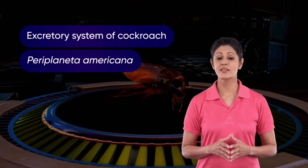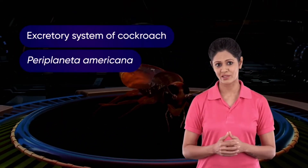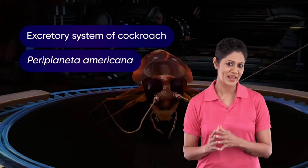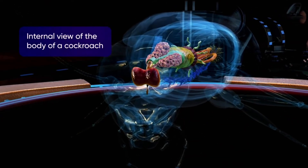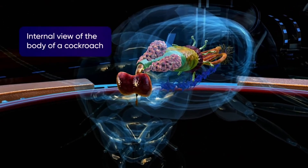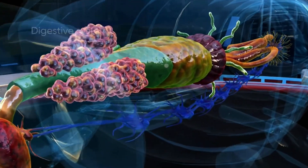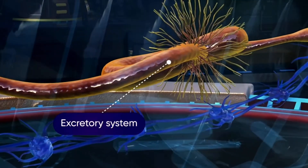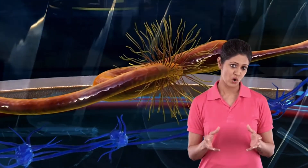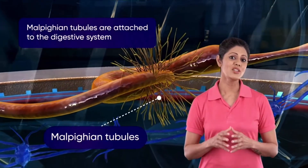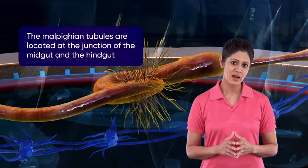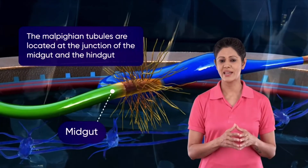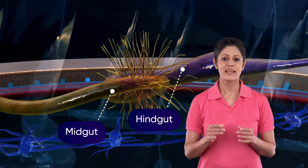The excretory system of a cockroach, Periplaneta americana: cockroaches belong to the class of insects. The excretory organs in a cockroach are Malpighian tubules that are attached to the digestive system. These Malpighian tubules are located at the junction of the mid-gut and the hindgut.